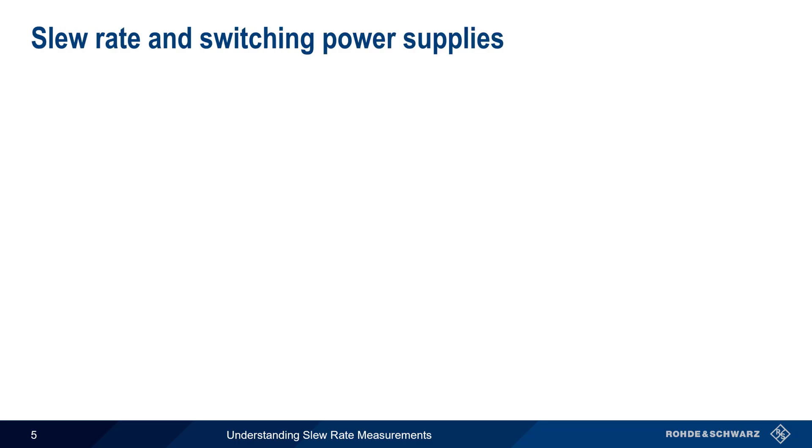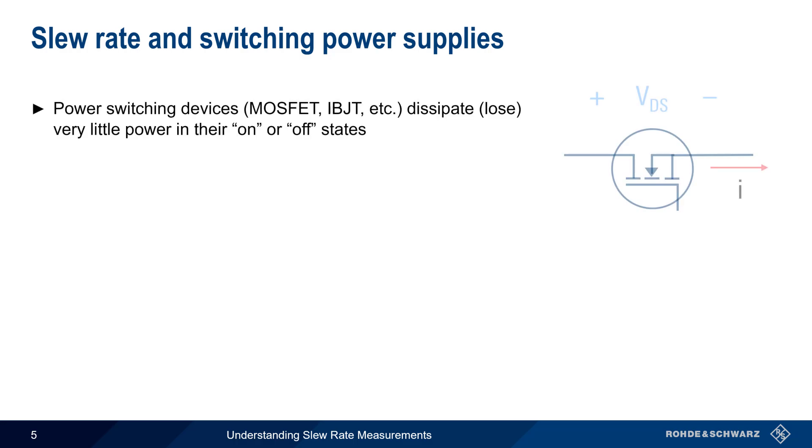Now let's come back to the importance of slew rate in switching power supplies. MOSFETs and other power switching devices dissipate very little power in their on and off states.